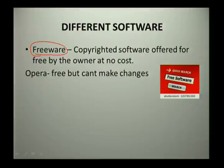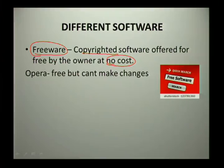The first type is freeware — software that is copyrighted but offered for free by the owner at no cost. Most people can download it from the internet without paying anything. An example is Opera Mini on your phone. The disadvantage is that you cannot make changes to the software, and there is little maintenance since it came at no cost.